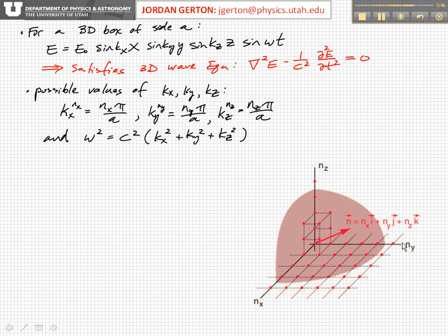Now, it should be clear from looking at this that there are multiple vectors, n vectors of the same length. That is there's multiple combinations of nx, ny, and nz, which give you the same total length of this vector.